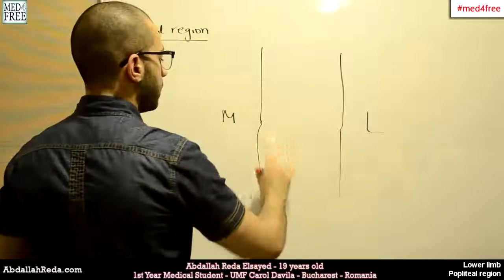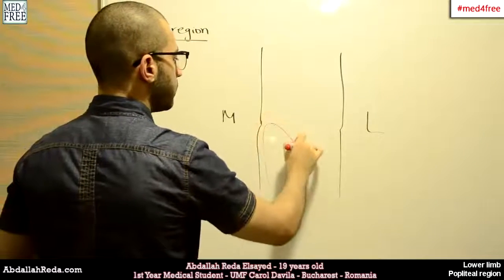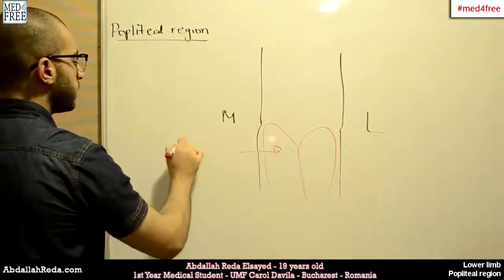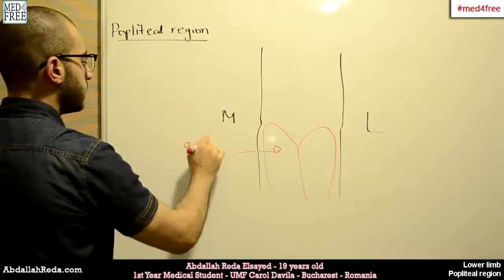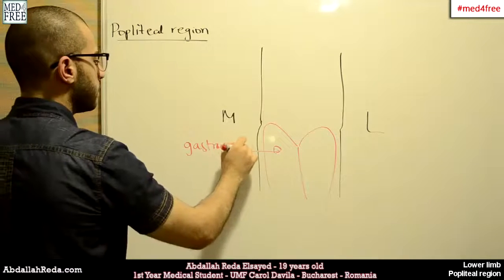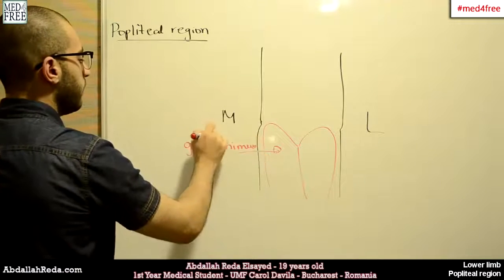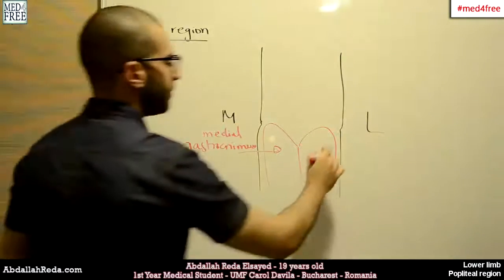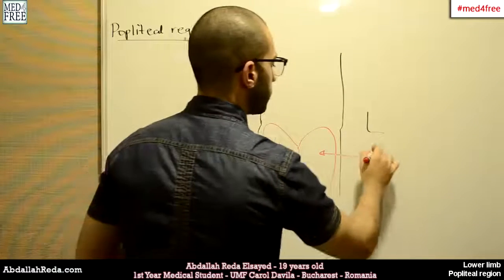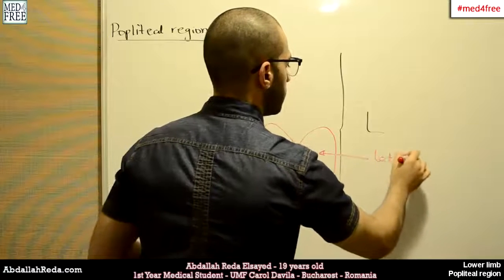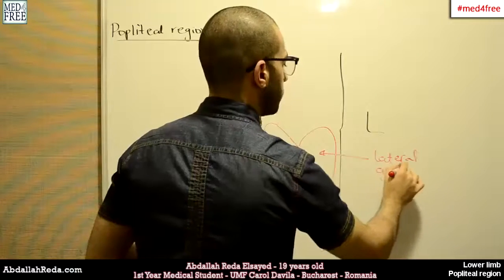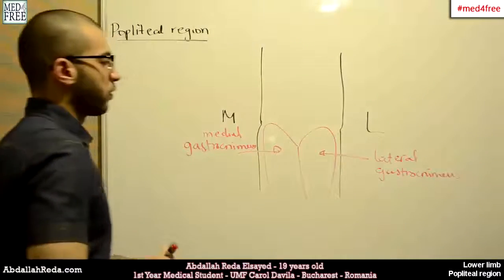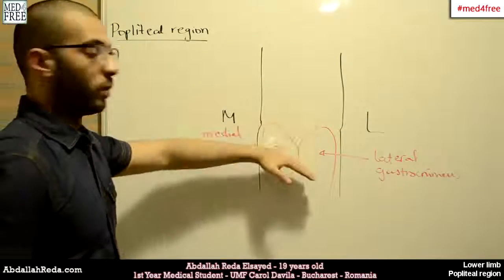The lower borders are formed by two muscle formations. We have the medial gastrocnemius and the lateral gastrocnemius muscles. So these will form the lower border.